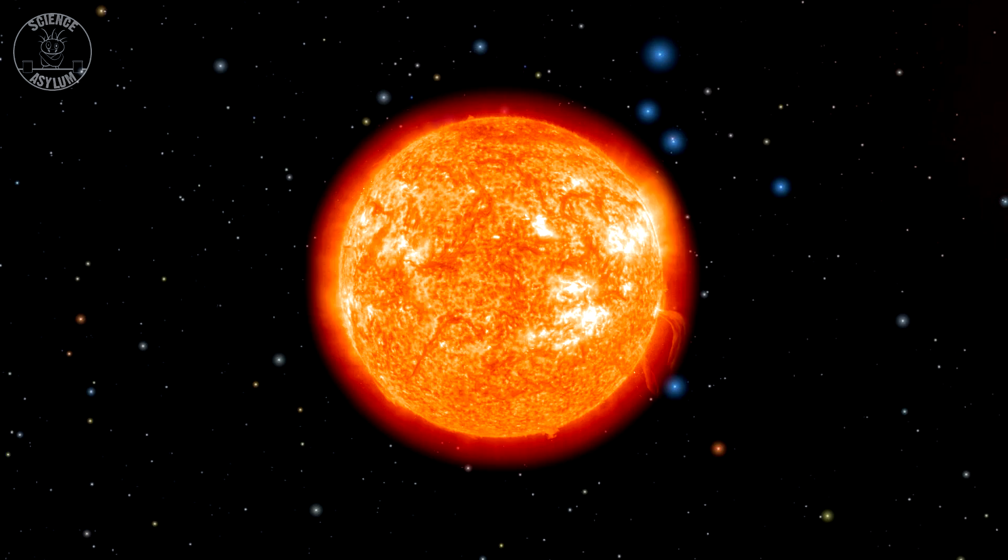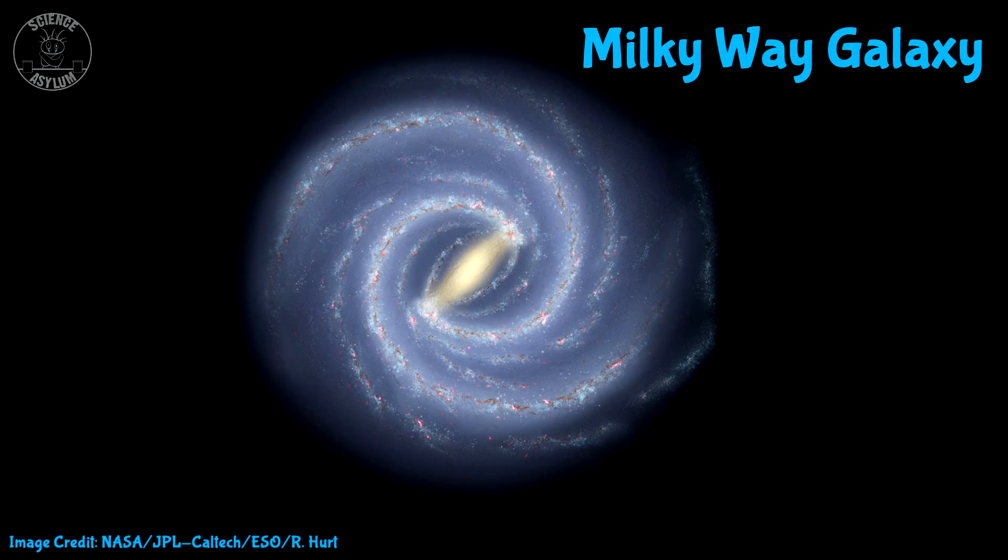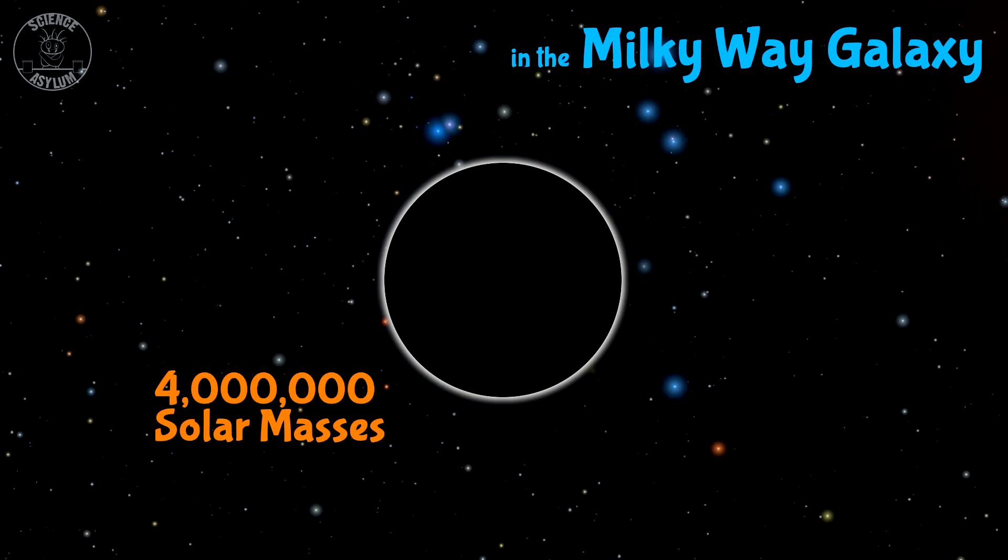How big can they get? Super big! Even though they don't start very big, they can gobble up more stuff and get bigger over time. There's a super massive one at the center of all the big galaxies, including the Milky Way. Ours is about 4 million solar masses, which means it's about 17 times the size of the sun.